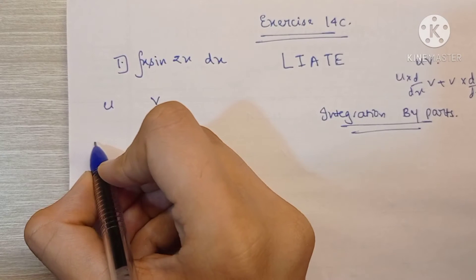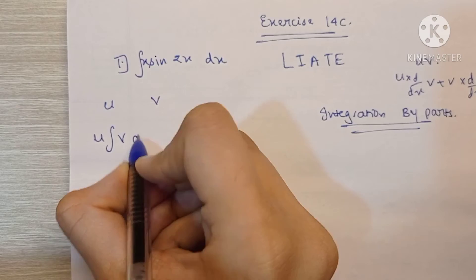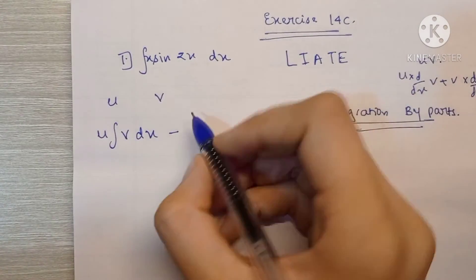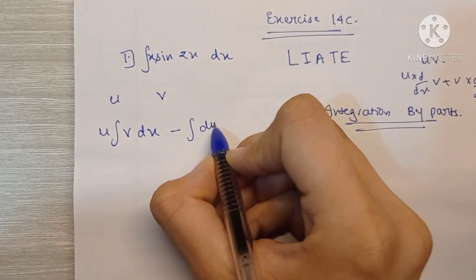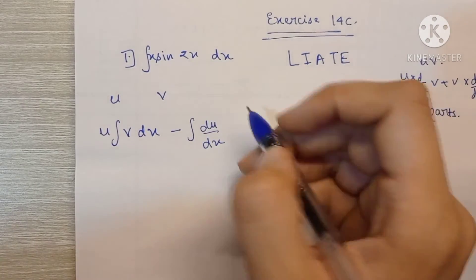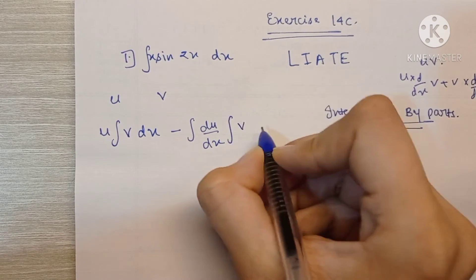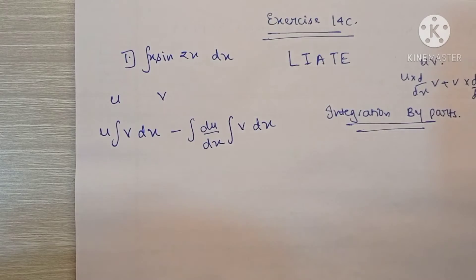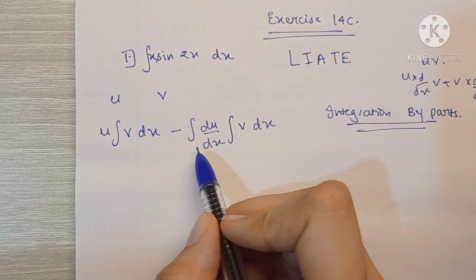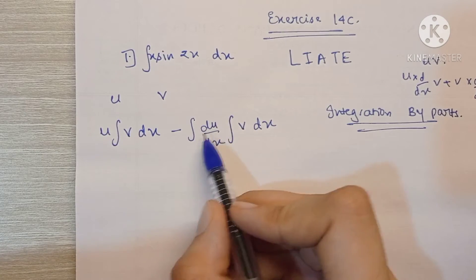So the uv rule states that we have to integrate u into the integration of v minus the integral of differentiation of u with respect to the variable stated here into the integration of v. So u into the integration of v, this is kind of like a double integral.